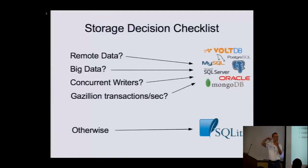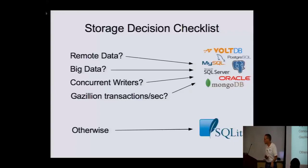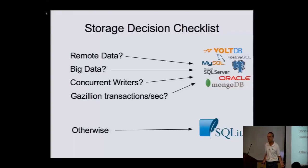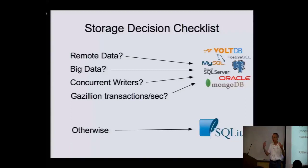Here's your decision checklist about what data storage engine to use for your project. Is the data remote? If the data is on a different device from where your application is running, use one of the traditional client-server databases. If it's big data — more than you're comfortable putting in a single file — use a traditional client-server database. If you've got concurrent writers trying to do a gazillion transactions per second, use a client-server database. That's what they're for. But for all those other cases, just use SQLite.